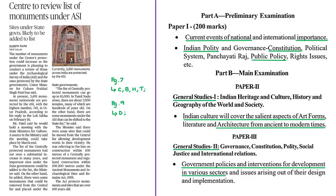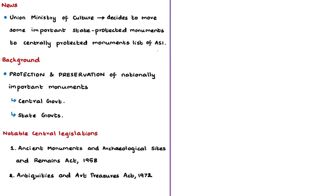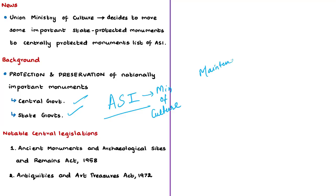The next discussion is about the Union Ministry of Culture's decision to move some important state monuments to the central monument list. In India, the physical protection and preservation of nationally important monuments is a function of both central and state governments. One such body under the central government is the Archaeological Survey of India (ASI), an attached office under the Ministry of Culture. The ASI's prime function is the maintenance of ancient monuments, archaeological sites, and remains of national importance.